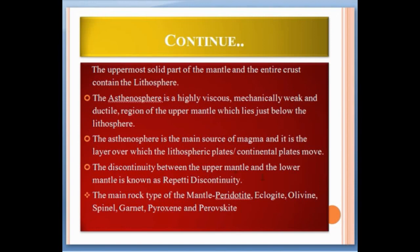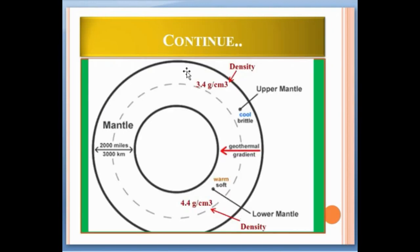The discontinuity between the upper mantle and the lower mantle is known as the Repetti discontinuity. The main rock types of the mantle are peridotite, eclogite, olivine, spinel, garnet, pyroxene, and pyroskite. The upper mantle is cool and brittle while the lower mantle is warm and soft. The density of the upper mantle is 3.4 grams per centimeter cubed while the density of the lower mantle is 4.4 grams per centimeter cubed.